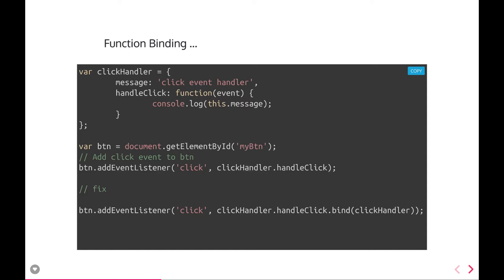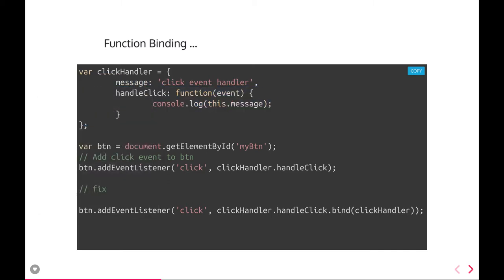In a nested function, 'this' can only be accessed within its own context. If you try to access it outside, it won't be available. The fix is either to assign 'this' to a self variable, or use bind. The safe approach is bind: call clickHandler.handleClick and bind 'this' to the click handler function. This way, the message variable will be available because you've already bound the click handler method.